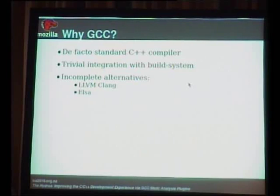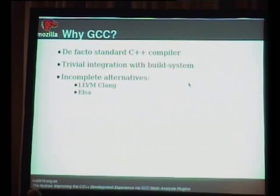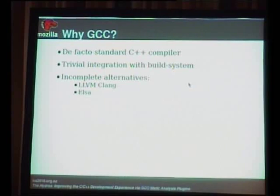GCC is a de facto standard C++ compiler — there's nothing else in Linux that compiles C++ that is open source. There's LLVM Clang, which I think is a great project, but it was about a year or two from being useful for C++. There's ELSA, which can actually parse Mozilla, but ELSA is a very nice academic project that doesn't have a compiler back-end. So you can parse Mozilla, but is your AST actually correct? You're building analyses on top of a framework that's not actually guaranteed to be correct.